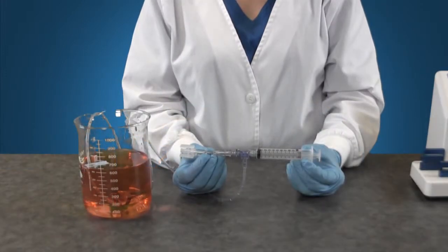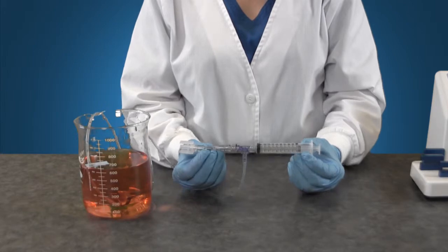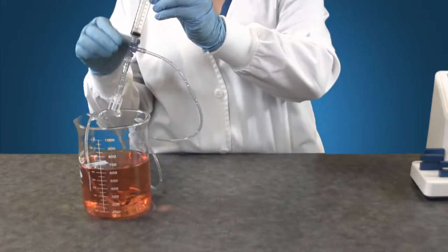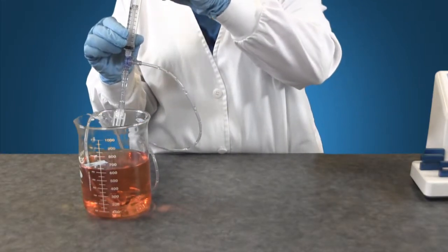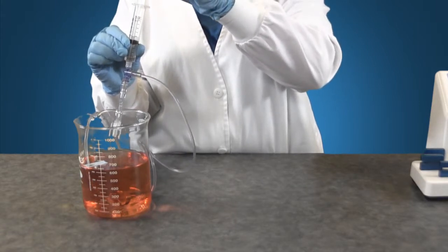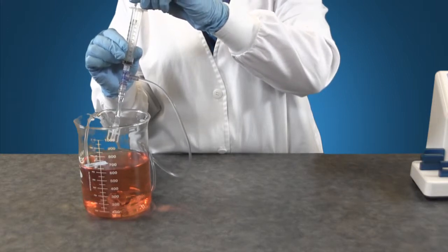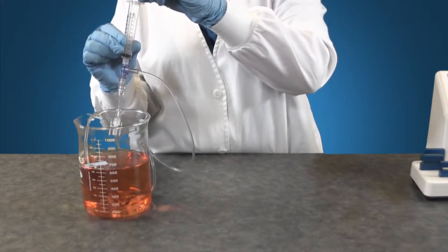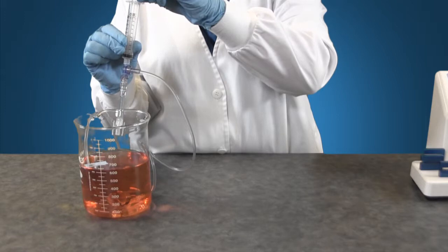With your tubing set assembled you are now ready to prime the set. Point the adapter end downwards into the beaker. Pull back on the syringe plunger to draw solution into the barrel. Press the syringe plunger to empty the solution back into the container. Repeat this process until the length of tubing is filled with solution.